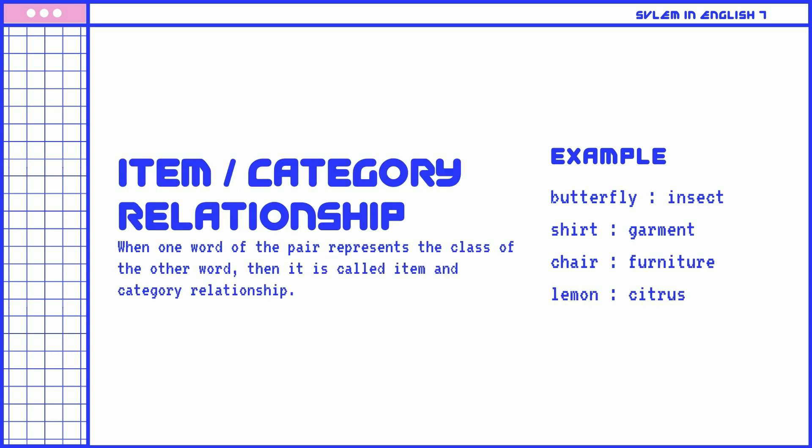Item-category relationship: When one word of the pair represents the class of the other word, then it is called an item-in-category relationship. Examples: Butterfly is to insect. Shirt is to garment. Chair is to furniture. Lemon is to citrus.